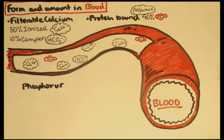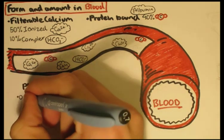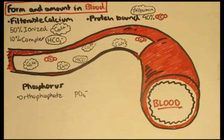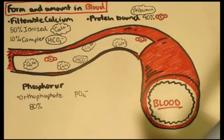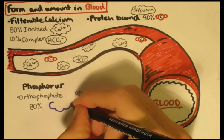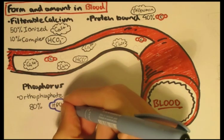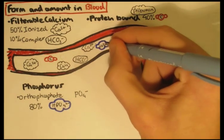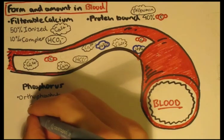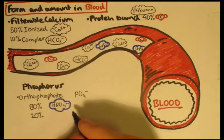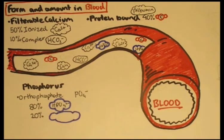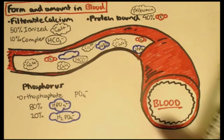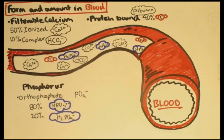Phosphorus exists primarily as orthophosphate, or PO4. Now under normal blood conditions and normal pH, approximately 80% of the phosphate is represented as hydrogen phosphate ion HPO4, and 20% represents as dihydrogen phosphate ion H2PO4.